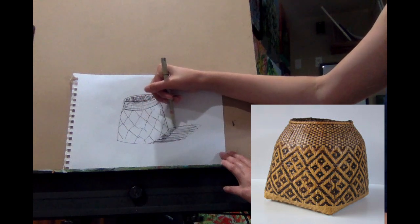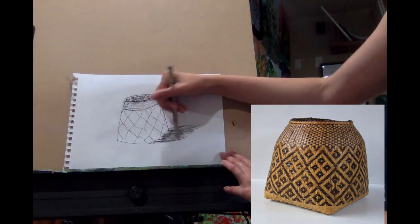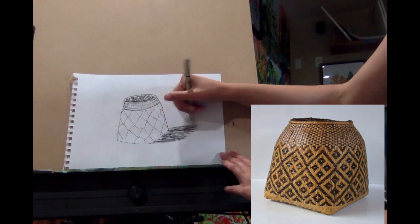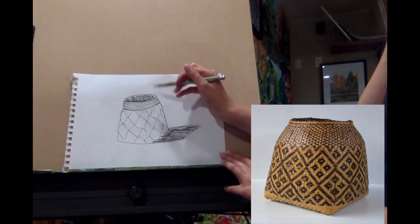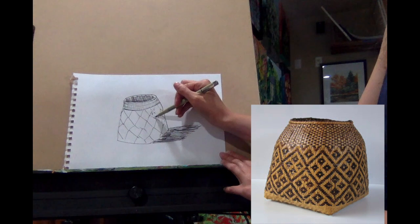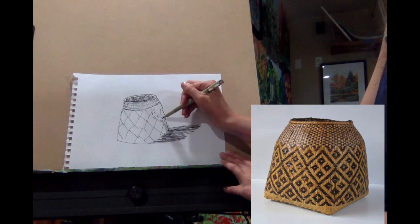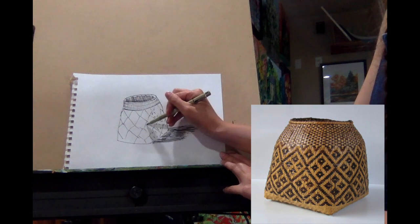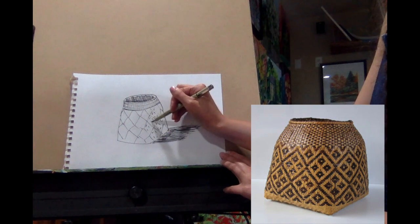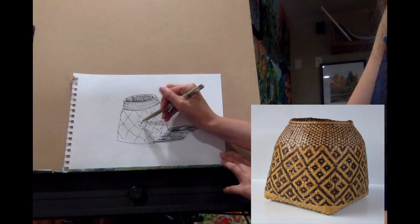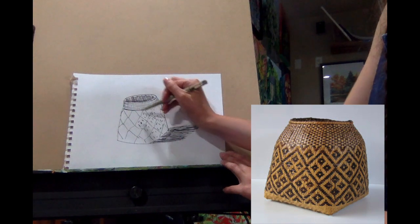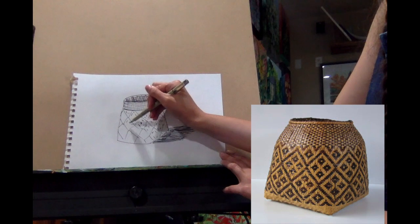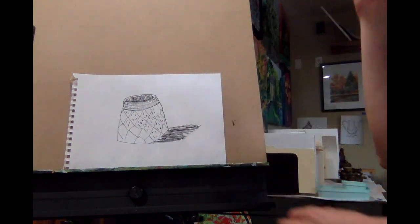Remember, really dark up close to the basket, and then it can get a little bit lighter as it works its way out to the right. And then let's go ahead and add some of that patterning inside of our triangles. Once you've added all your marks and details, feel free to add more.